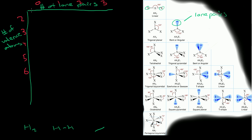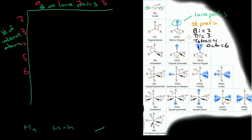There is one other thing we need to define: the prefixes for the numbers. We need to know that bi equals 2, tri equals 3, tetra equals 4, and even though octa normally represents 8, for these purposes we will refer to octa as 6. You'll understand the intuition of why in a few minutes.